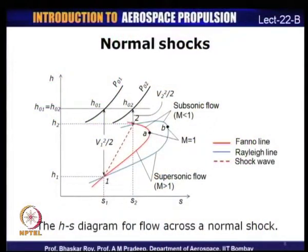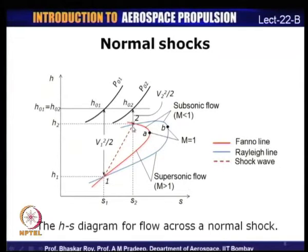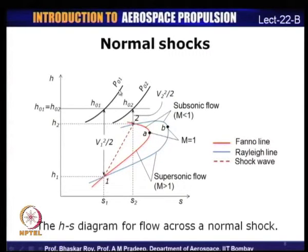Let me illustrate that through an H-S diagram. On this H-S diagram, the Fanno line equation is shown by the red line and the Rayleigh line equation is shown by the blue line. These two curves meet at two points, points 1 and 2. Joining these two intersection points by a dotted line indicates the flow across the shock wave.